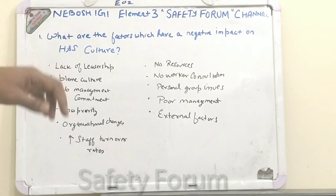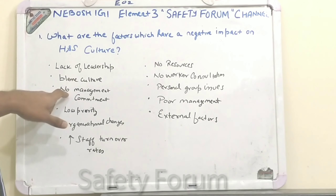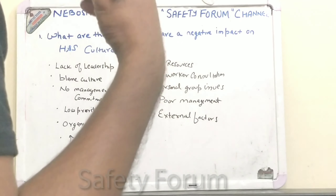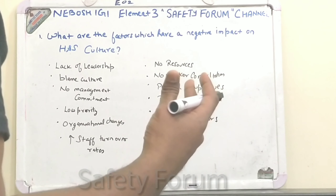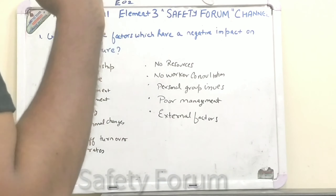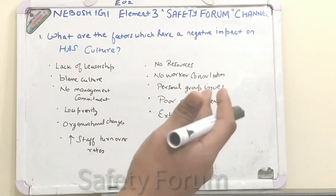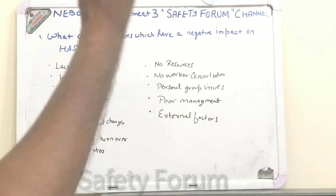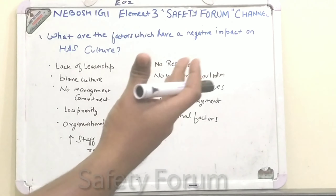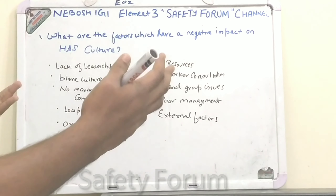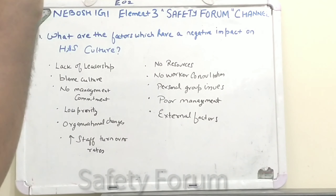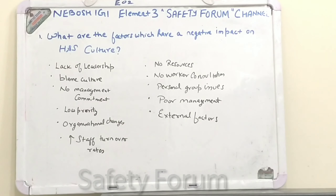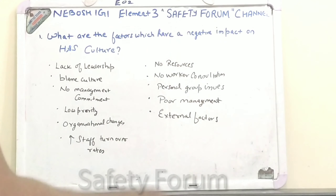The third one is no management commitment — a lack of any management commitment in safety. For example, the management is saying one thing and doing another. If management is not following up on commitments related to health and safety, and they are supporting other divisions instead, again there will be a negative impact on health and safety.